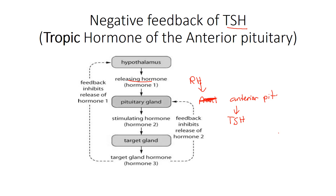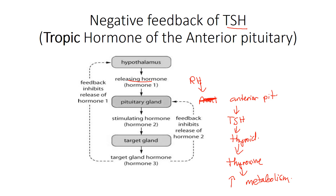TSH is thyroid-stimulating hormone, so just like it says in the name, it's going to stimulate the thyroid. The thyroid then releases thyroxin. Thyroxin increases cell metabolism — you're going to burn glucose much quicker when you have higher levels of thyroxin. This is all something you're going to see in the next topic when you look at the seven anterior pituitary hormones.